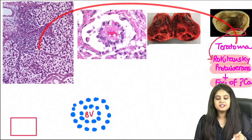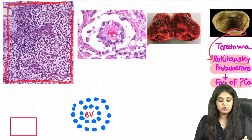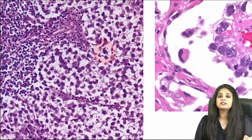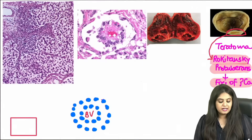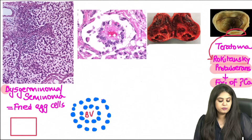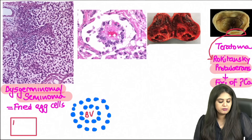Starting from the beginning: an ovarian or testicular tumour where cells show whitish cytoplasm instead of the usual pink — similar to fried eggs. In the ovary this is dysgerminoma; in the testis this is seminoma. The tumour markers for both are PLAP as well as LDH.